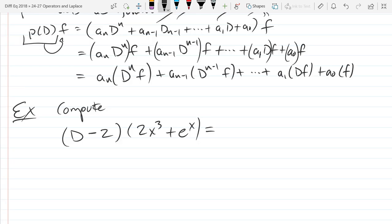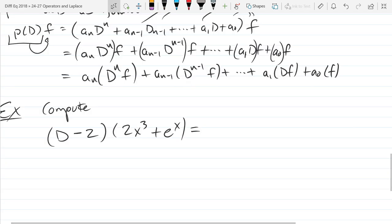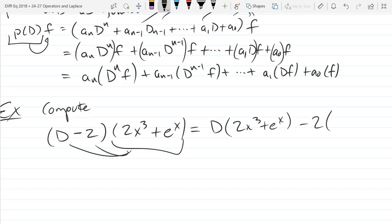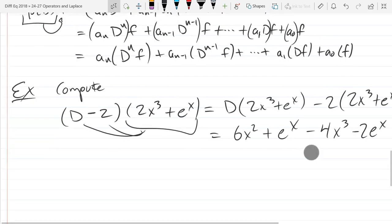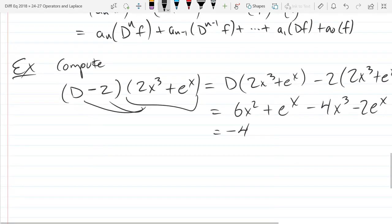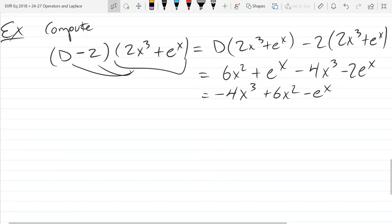What I'm going to do is exactly what I did above, which is take our function f and distribute it to both operators. We got D of 2x cubed plus e to the x minus 2 times 2x cubed plus e to the x. These derivatives, the calculus of this is super easy. 2x cubed derivative is 6x squared. E to the x derivative is e to the x. I'm not performing a derivative on the second. It's just constant times that. So it gives us negative 4x cubed minus 2e to the x.